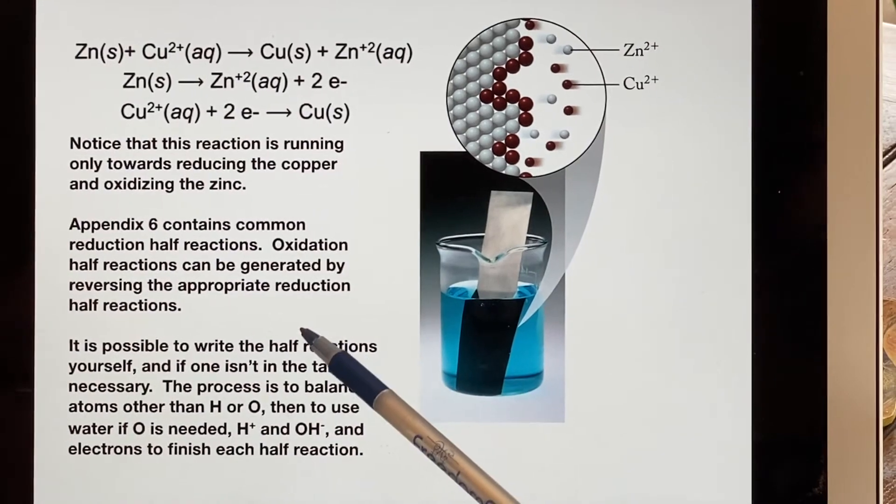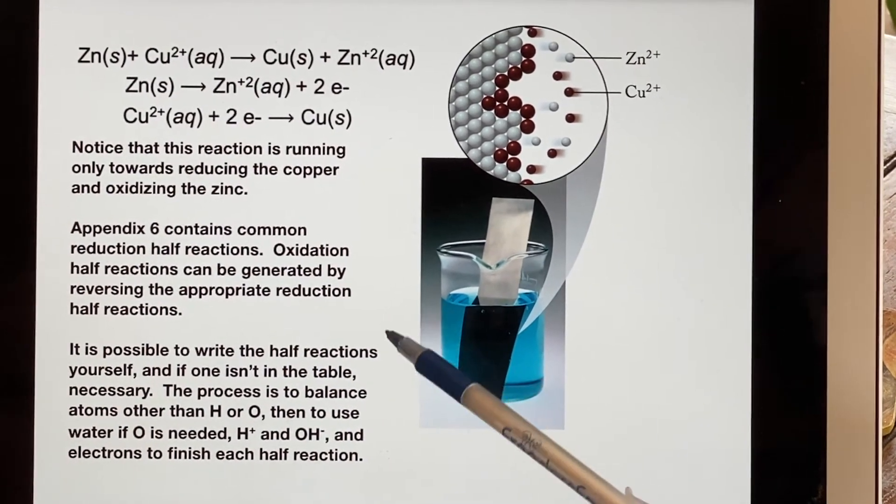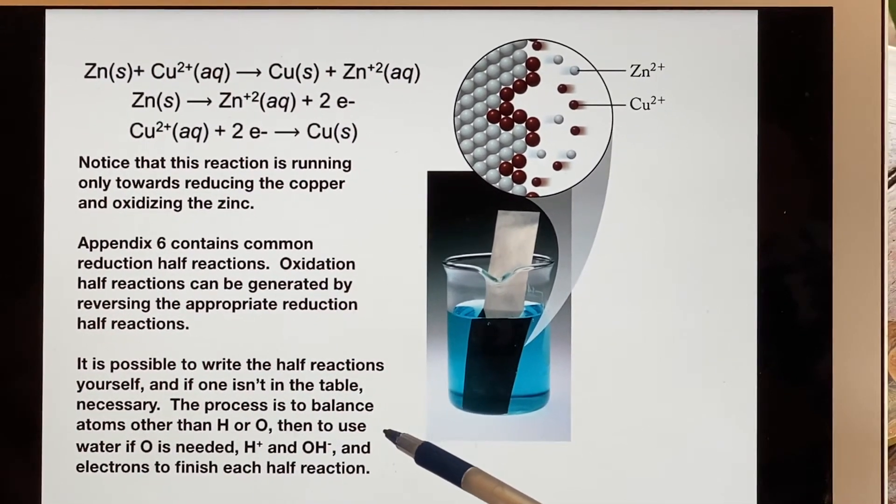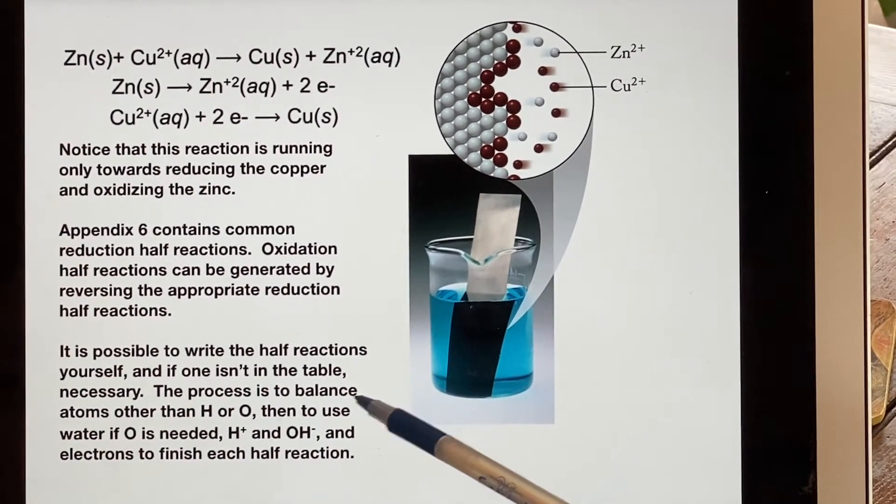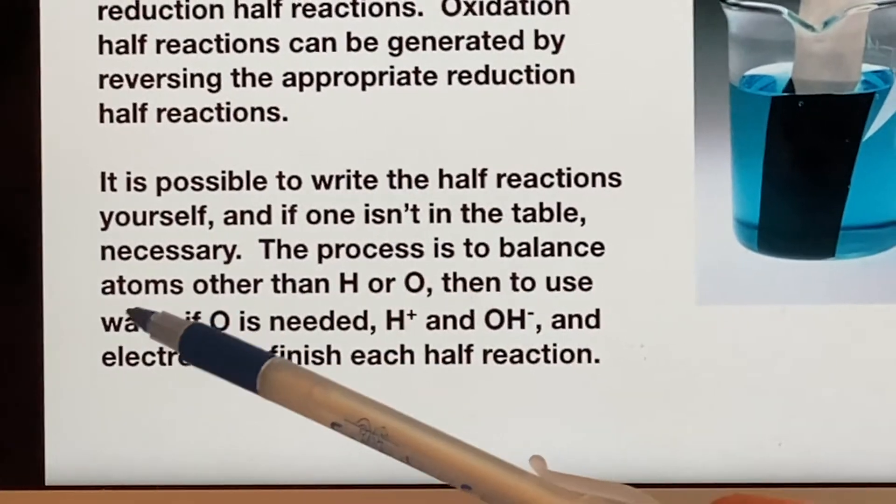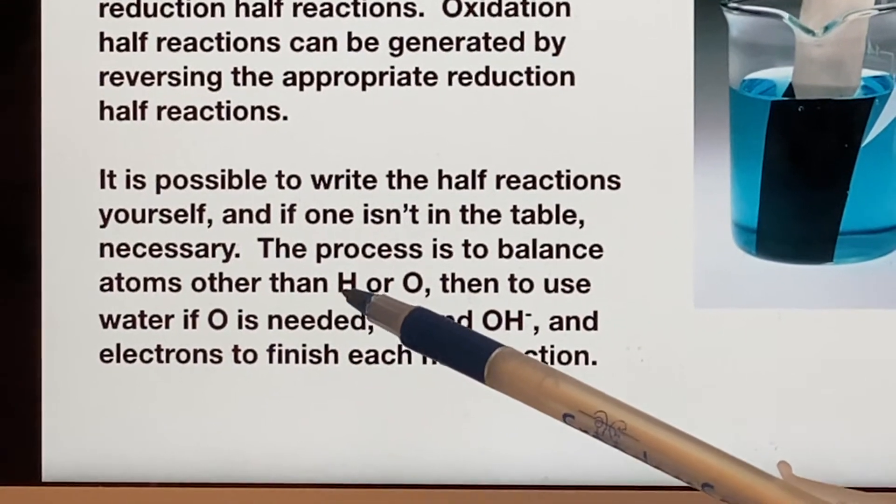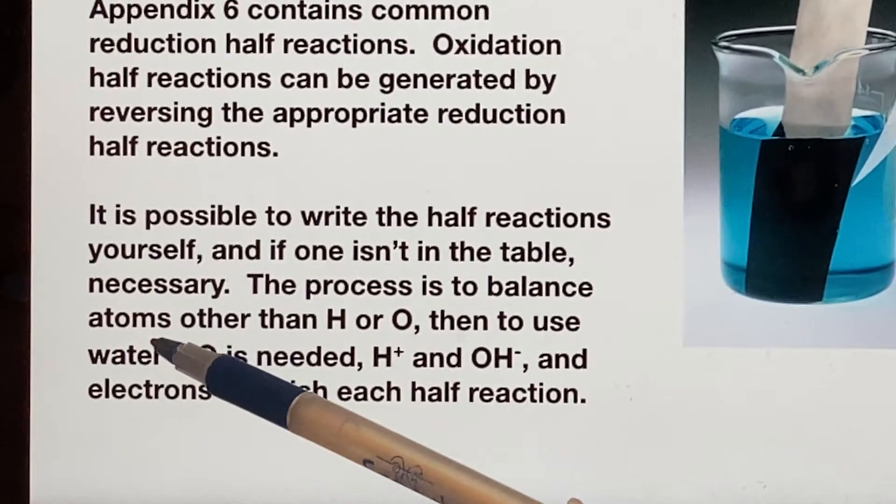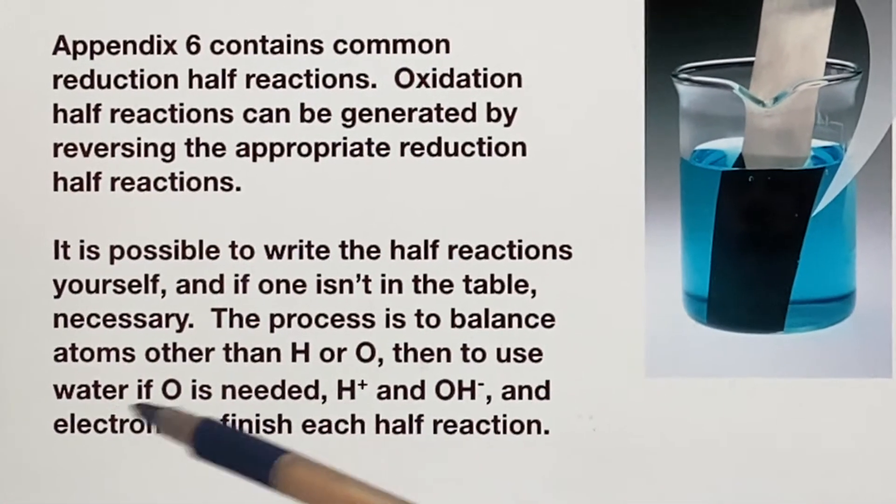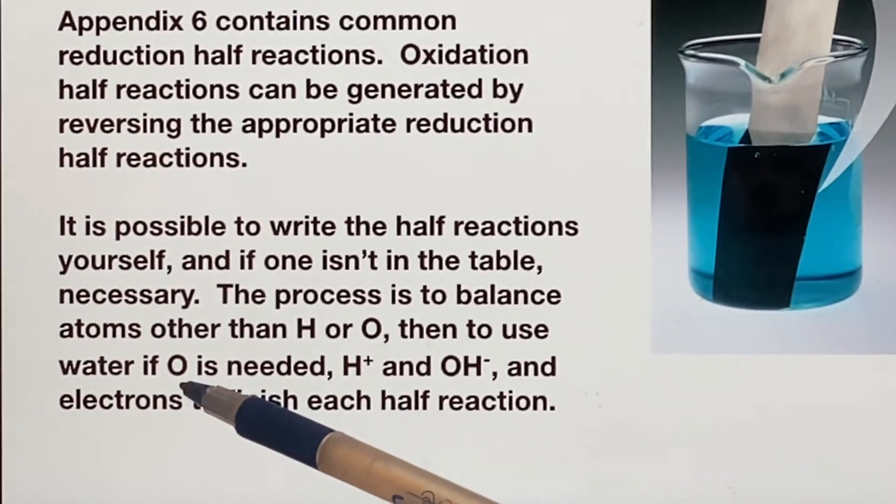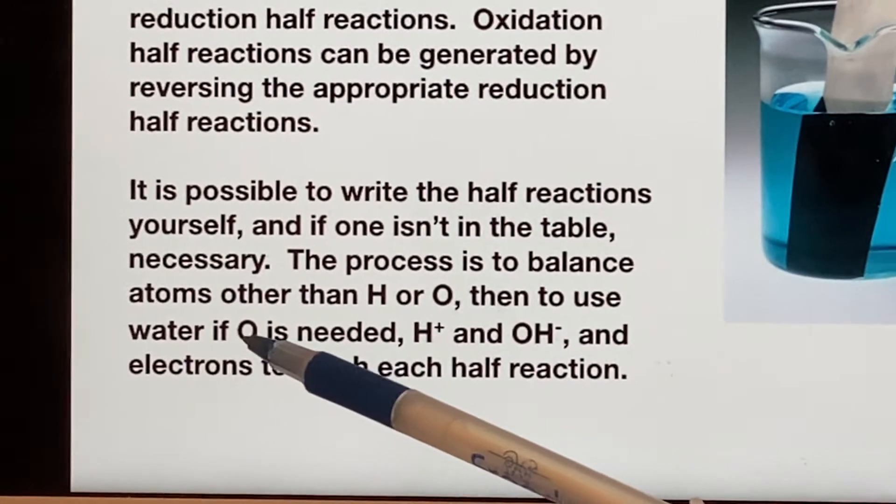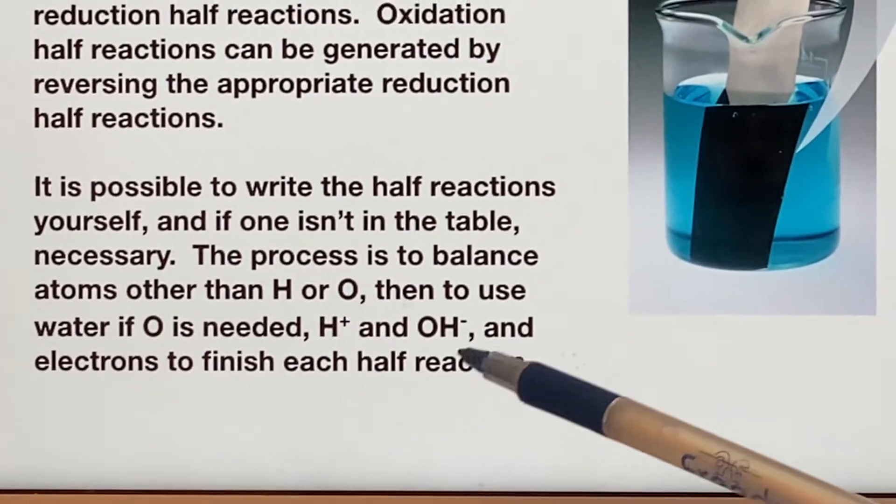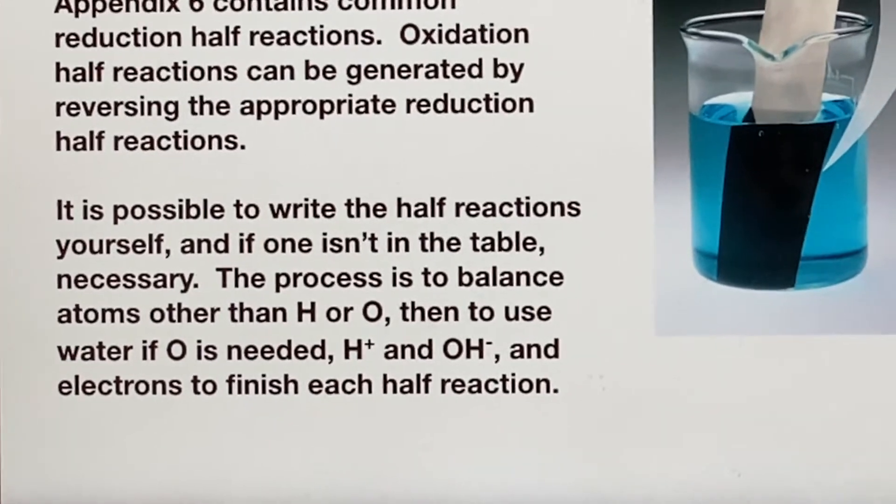You can write half reactions yourself, and if one isn't in the table, you're probably going to have to. The process generally is that you balance the atoms that exist that aren't hydrogen or oxygen. If you see that oxygen is somewhere in there and it's not balanced on both sides, then you're going to put more water in as your source of oxygen. That generally means then that the amount of hydrogen gets messed up, so you will end up having to use either hydrogen ions or hydroxide ions to finish the half reactions. We'll do those so that you can see them.